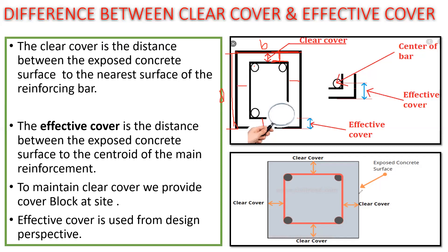This is a column section. This is the outer surface — the exposed surface. From there to the nearest surface of the reinforcement bar, that distance is the clear cover. This is the clear cover, and it is provided with the help of a cover block.